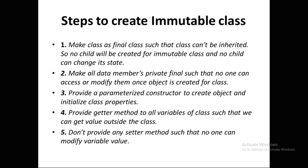Let's check how we can create an immutable class. These are the steps: The first step is to make the class a final class, so that it cannot be inherited and no child class can change its state. The second step is to make all data members private final, so that no one can access or modify them once the object is created. The third step is to provide a parameterized constructor to create objects and initialize class properties. The fourth step is to provide getter methods for all variables so we can get values outside the class.